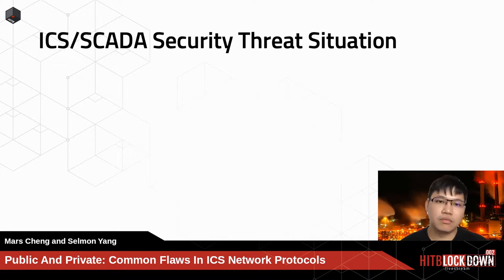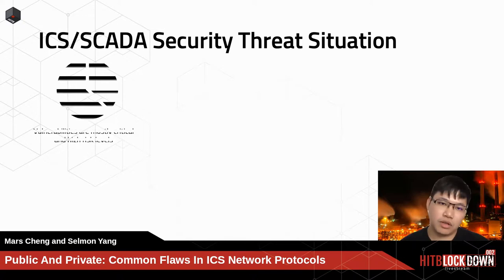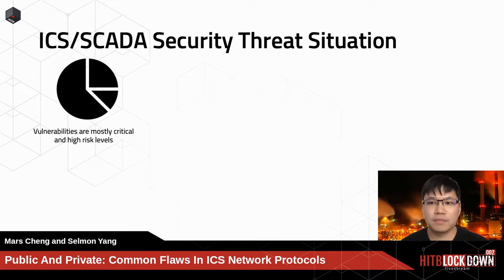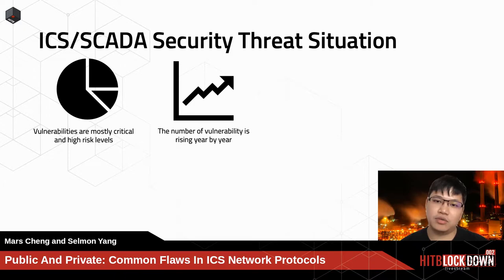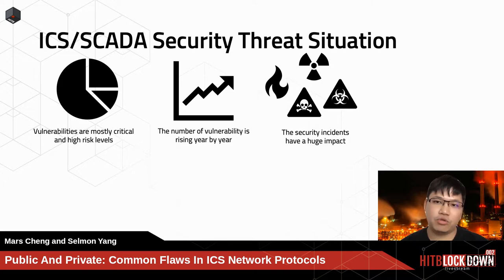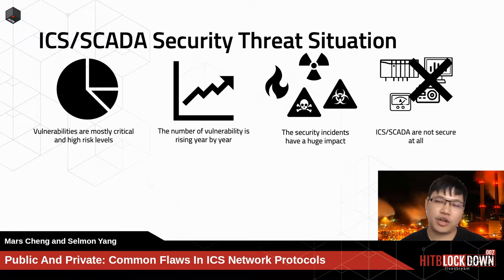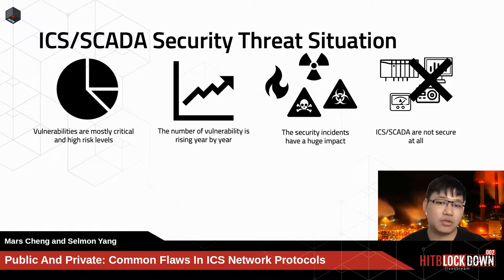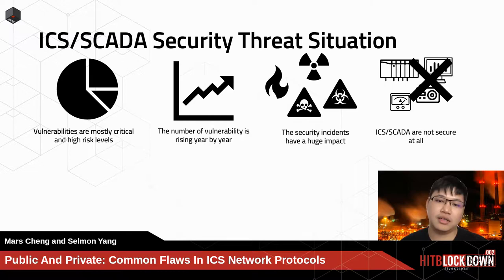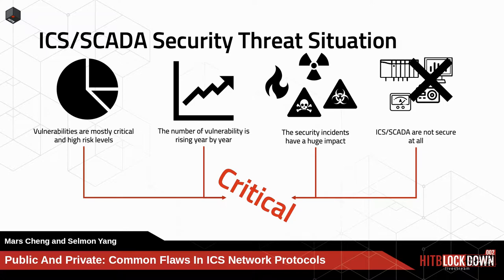Now we know ICS vulnerabilities are most often rated at critical and high-risk levels, which hackers can easily exploit. The number of vulnerabilities is rising year by year, with more and more attacks exploiting ICS vulnerabilities and security incidents often making a huge impact. ICS and SCADA are not secured at all. As reports have mentioned, 71% of sites are still using obsolete Windows systems such as Windows XP or Windows 7, while 27% of industrial sites have at least one direct connection to the public internet. We think ICS security is in a critical status.